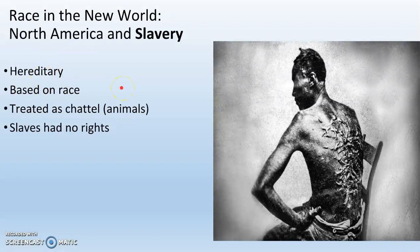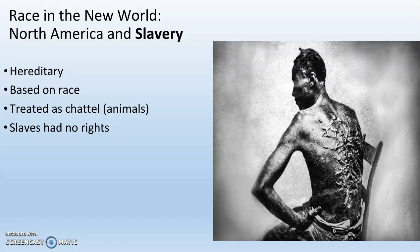Slavery in the New World — not just North America, but North and South America — number one, is hereditary. If you are a slave, your children are slaves. It didn't work like that in the Roman Empire, where slaves generally got their freedom and their children were never slaves. It didn't work that way in Africa either. People might have been captured and forced to work for another tribe or kingdom, but it wasn't hereditary — your children were part of the tribe just like everyone else eventually.